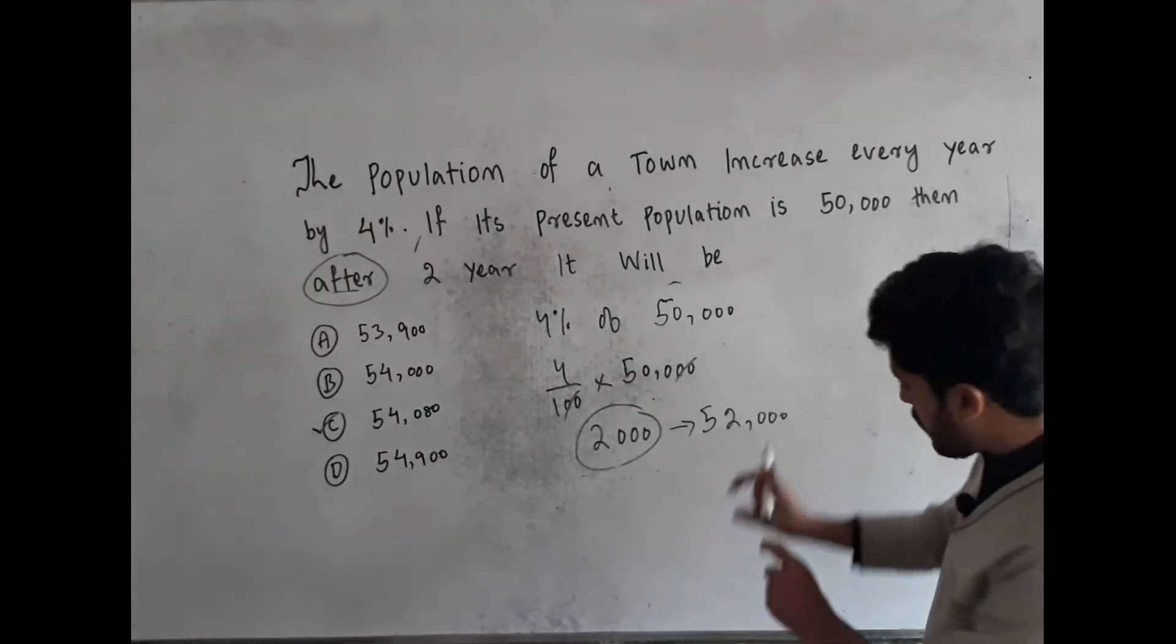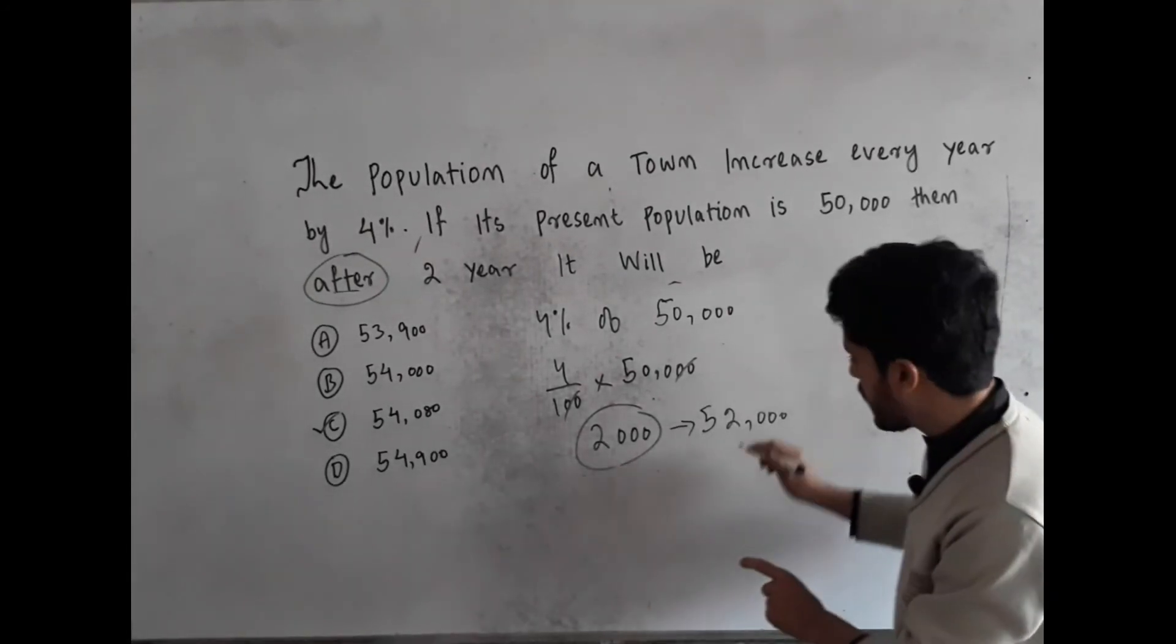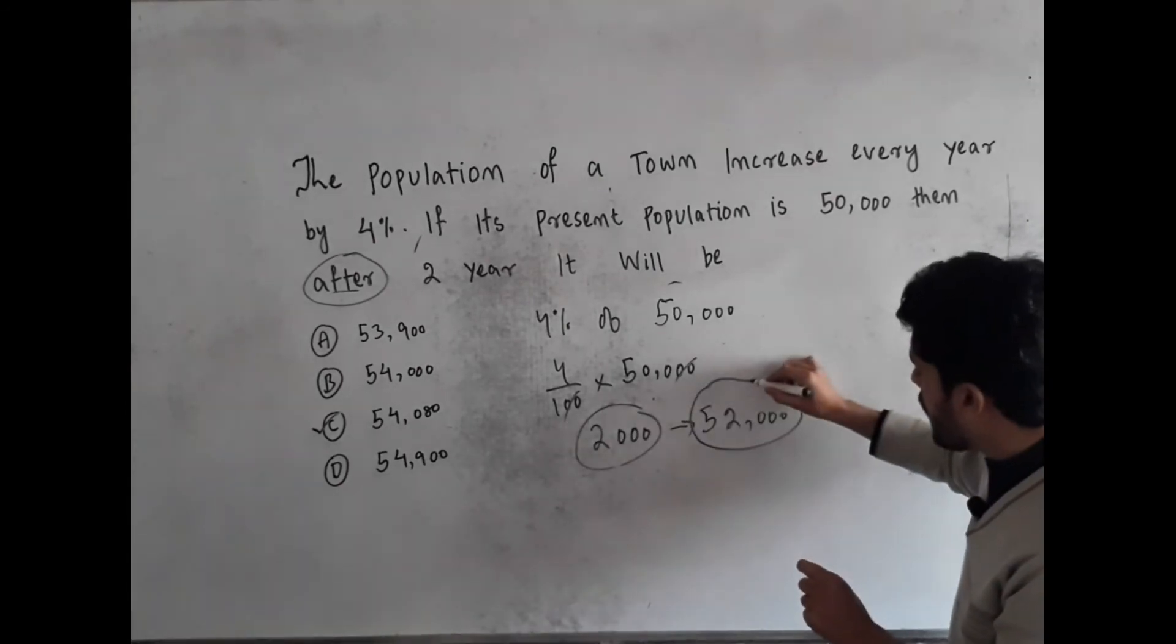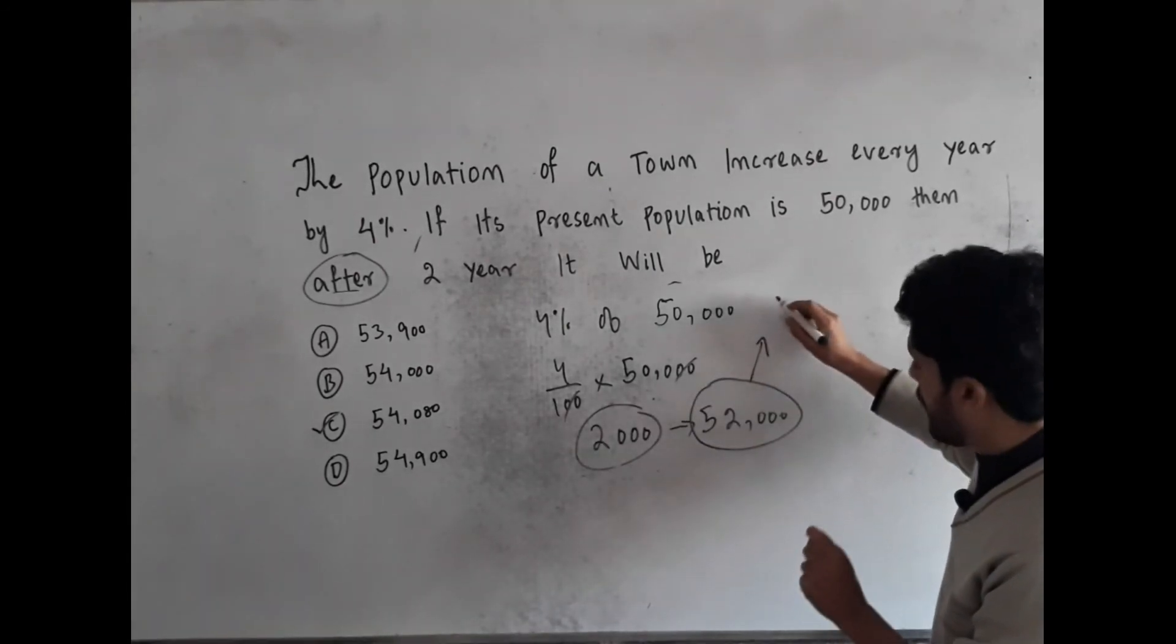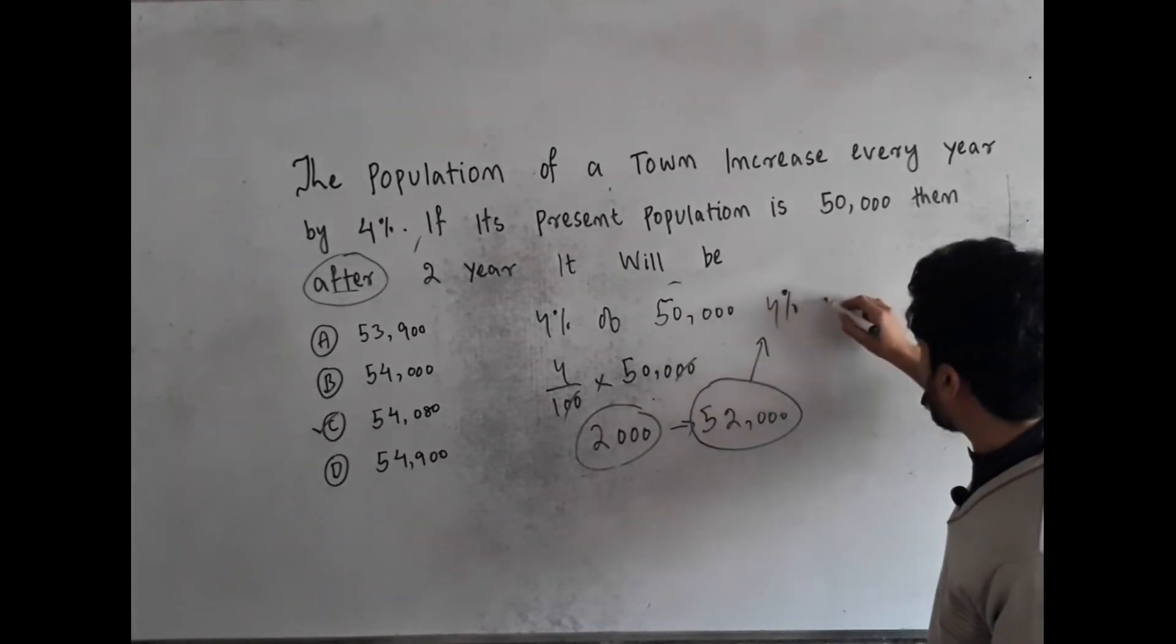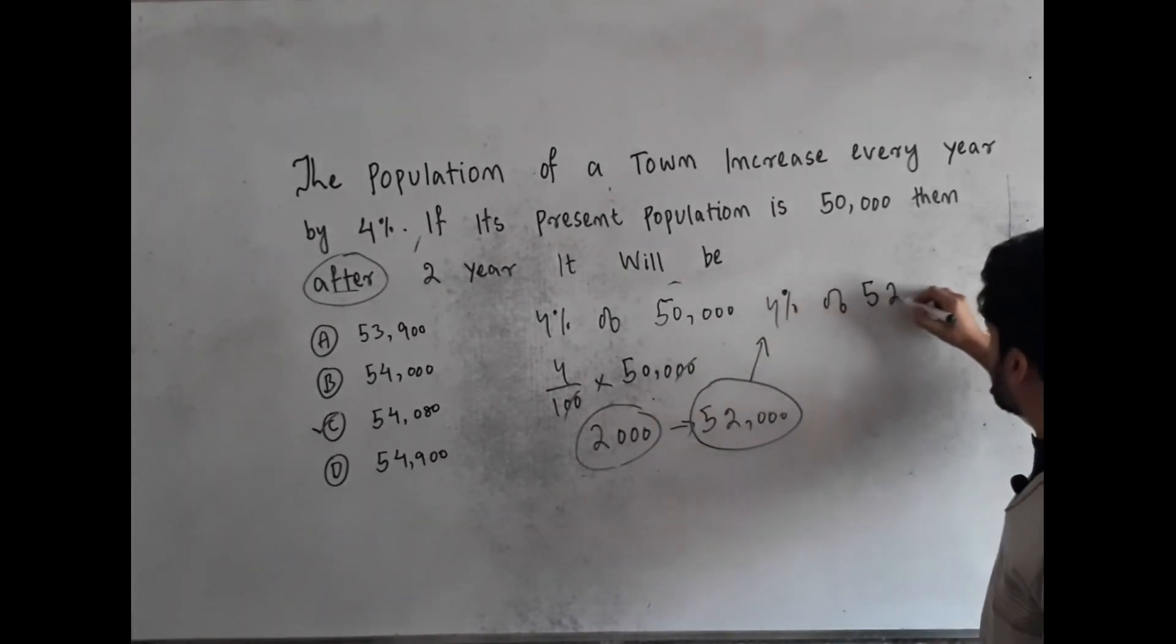It would be equal to 52,000. Now, it means that in the first year, after the first year, the population of the town is 52,000. Now you have to add 4 percentage of this also, which is 4 percentage of 52,000.